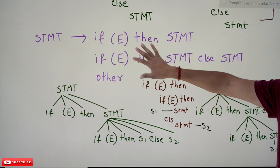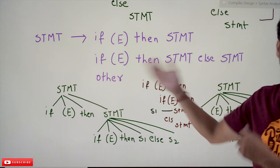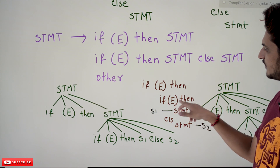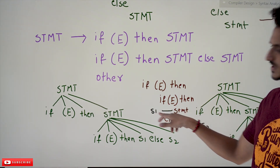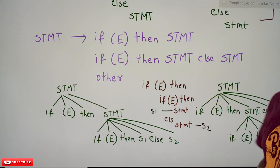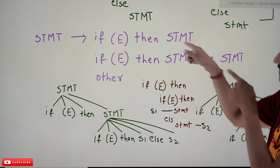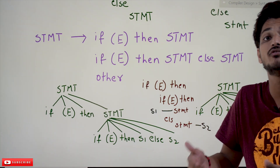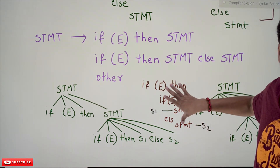Let's take an example of what problem you get with this ambiguous grammar. Consider: if expression then if expression then statement S1 else statement S2. Because of this ambiguity, we have two different ways to parse this if-else statement.